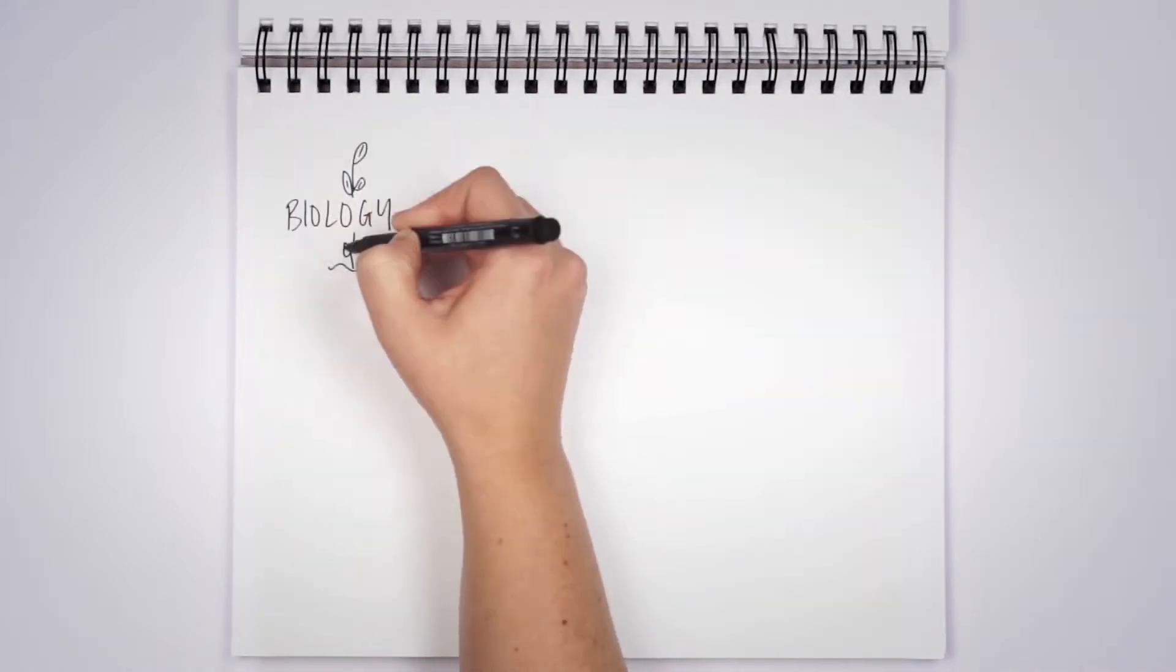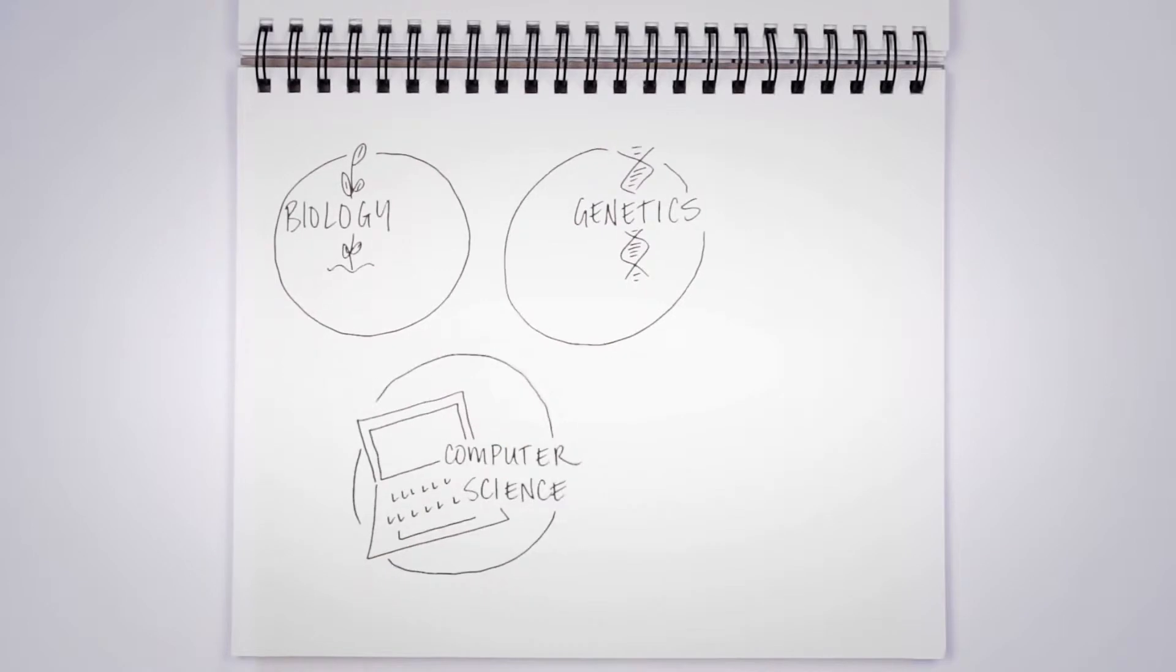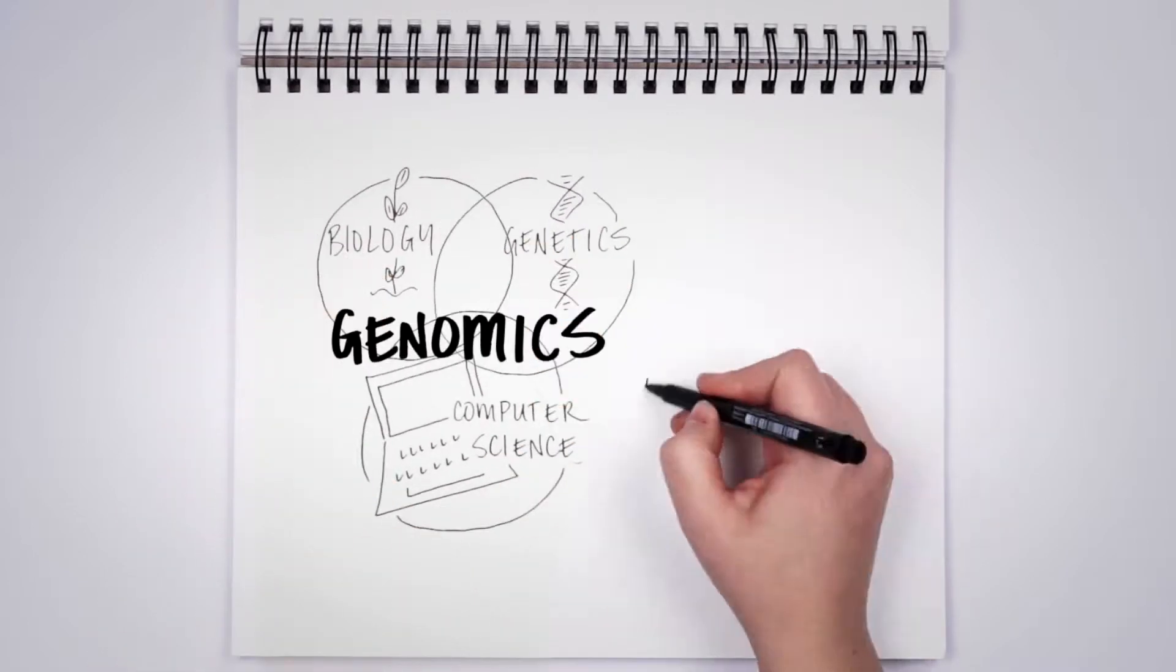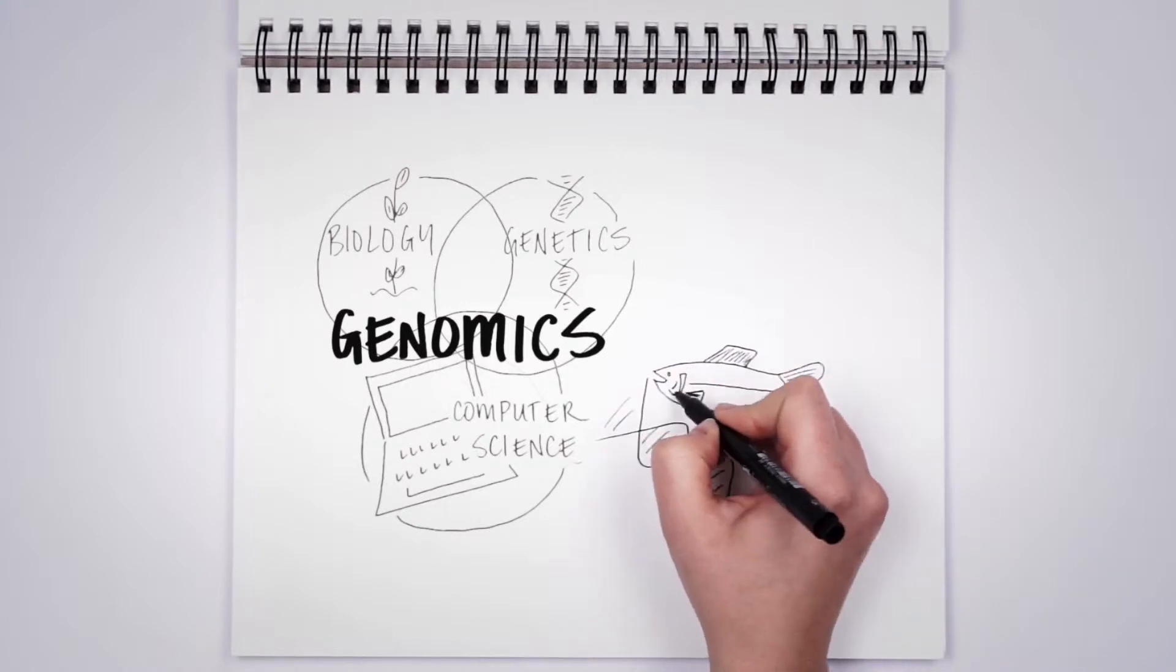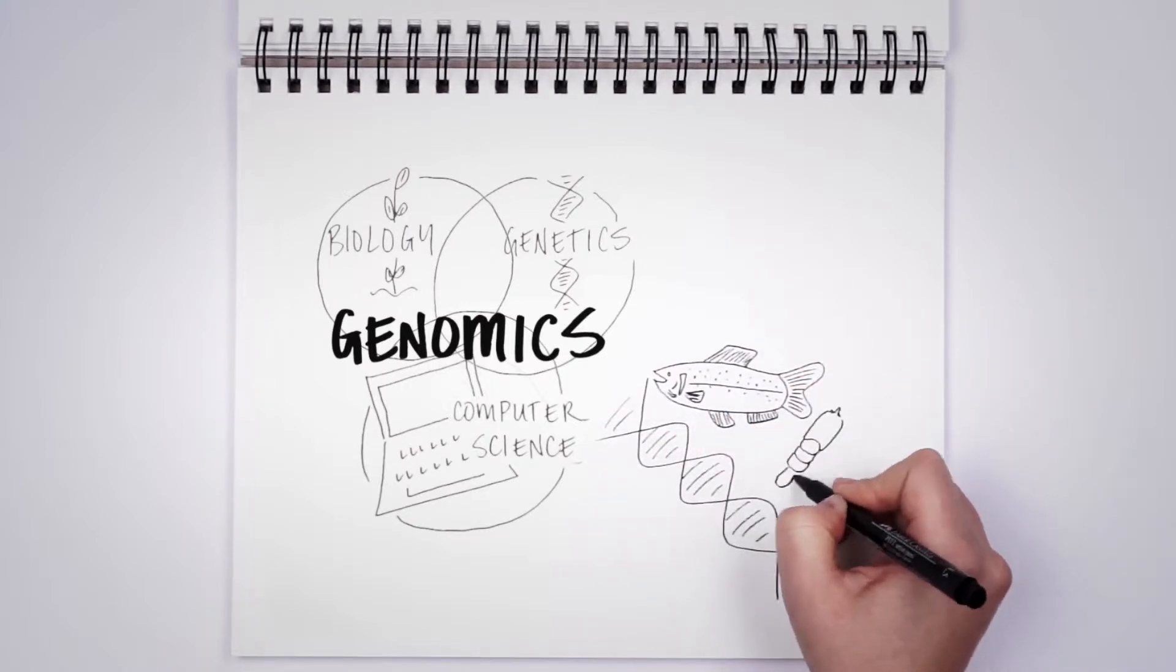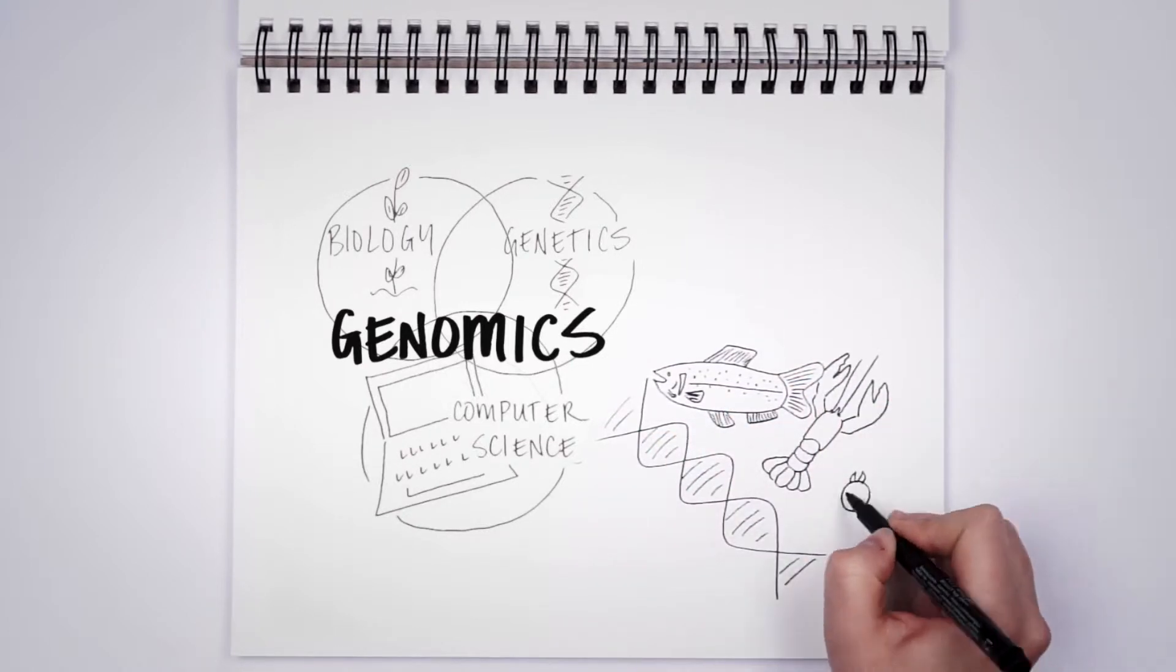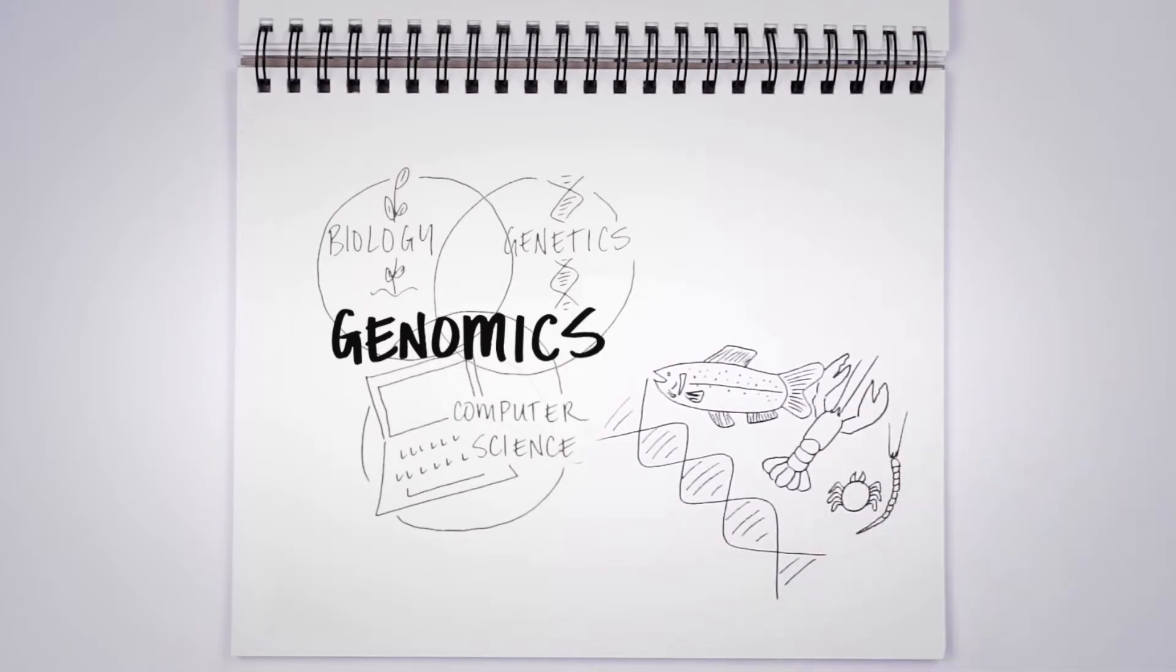Genomics combines biology, genetics, and computer science to give us an in-depth look at the DNA of living things. In the fisheries and aquaculture space, that includes the fish and shellfish themselves, to the pests and other organisms that play a role in their environment.